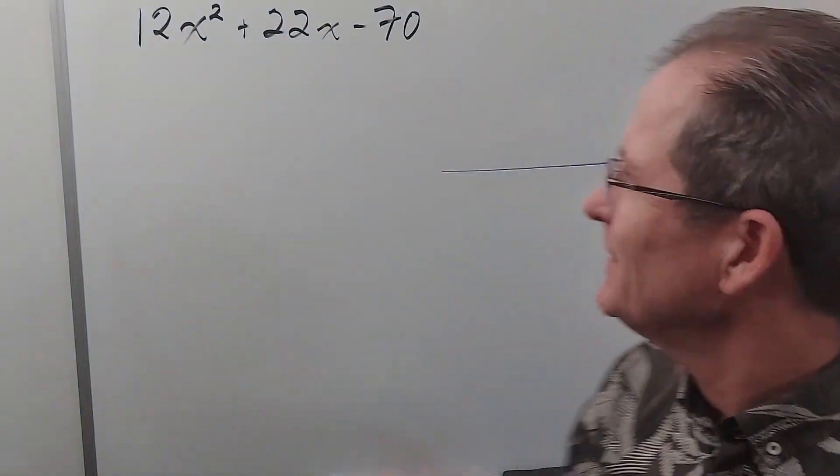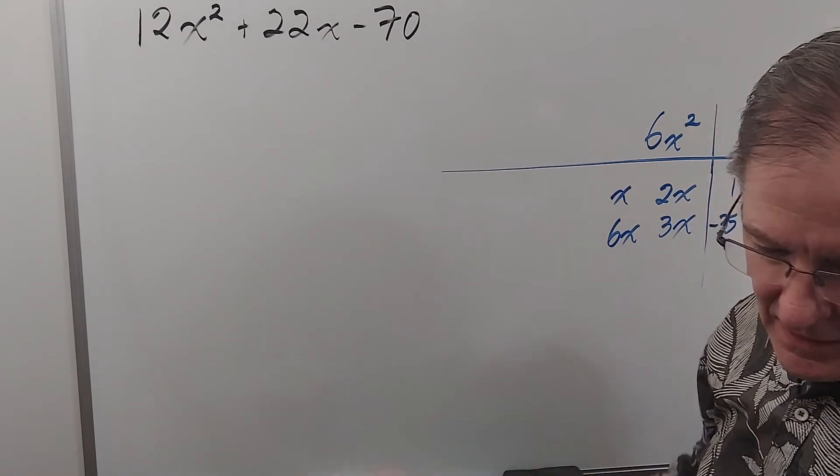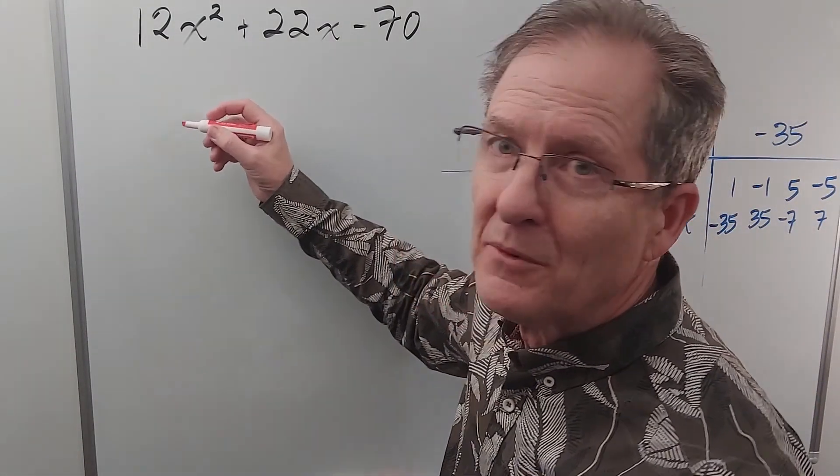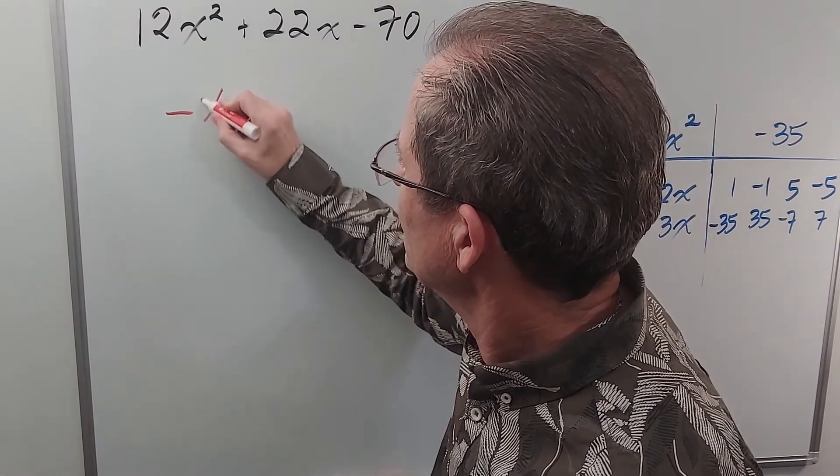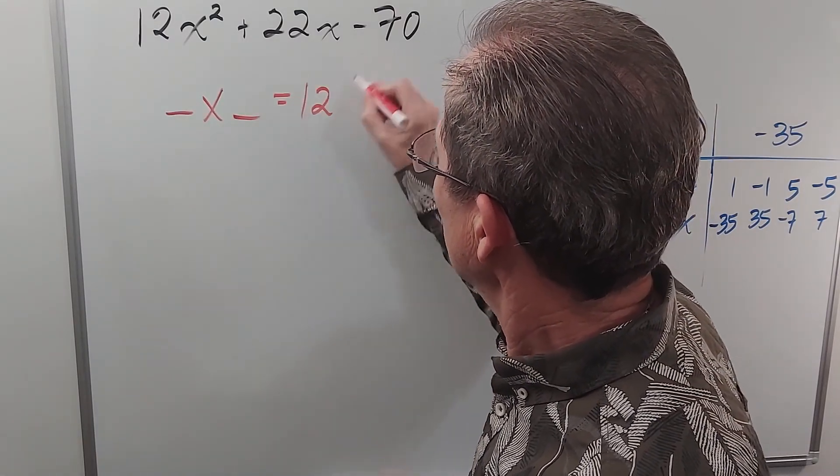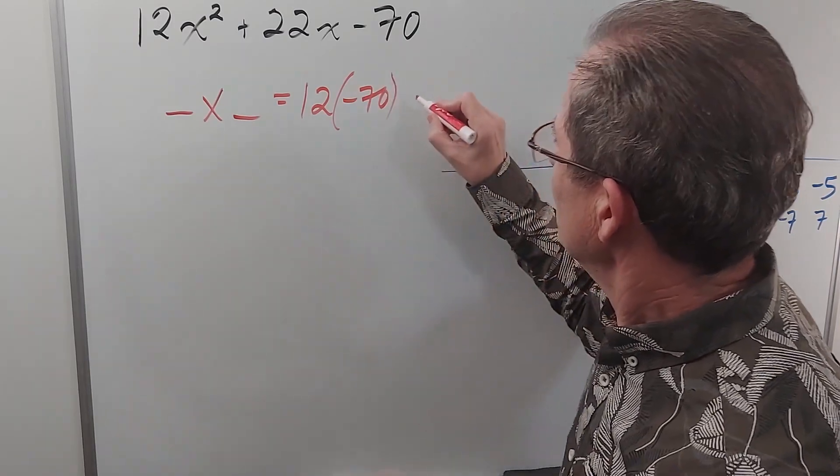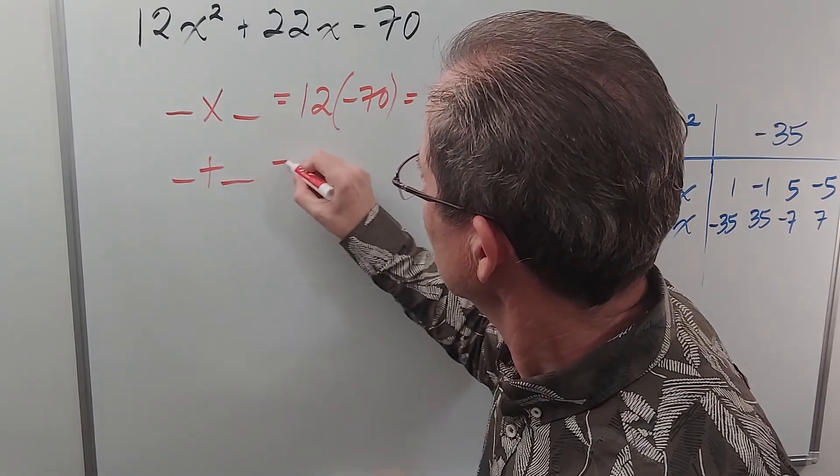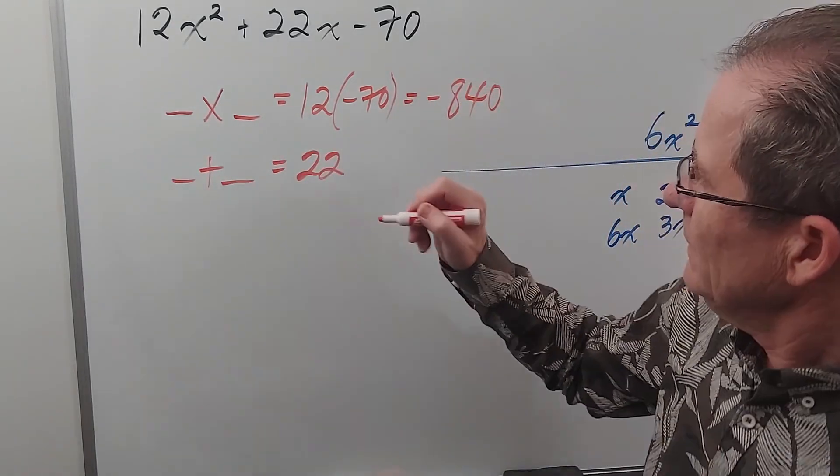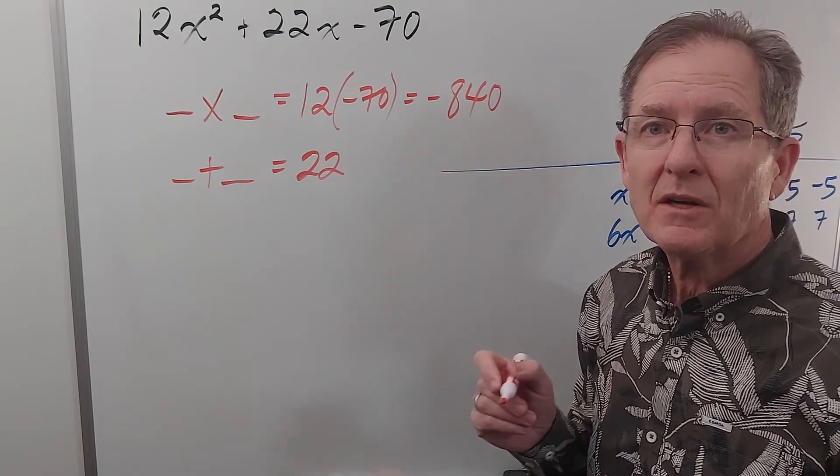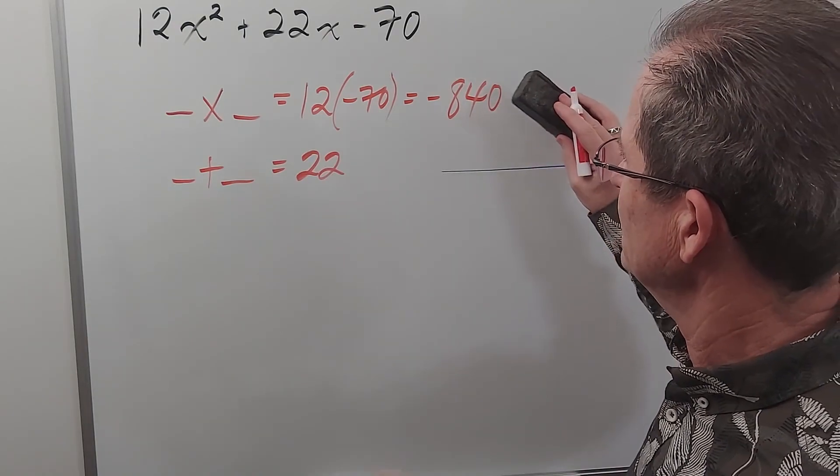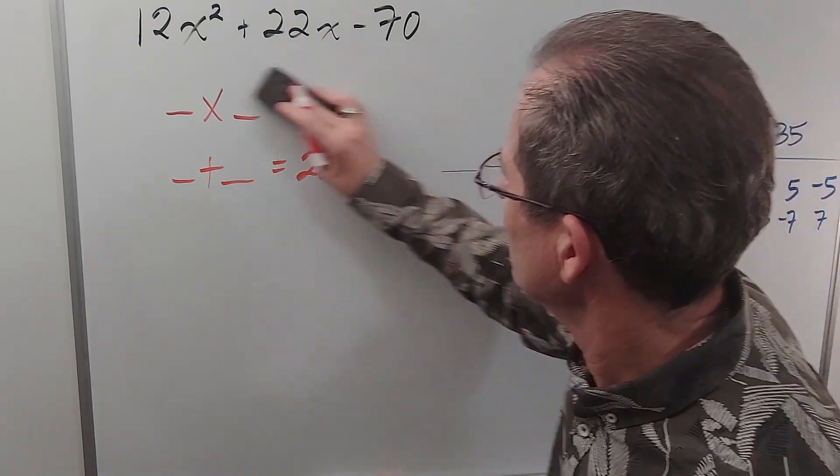Alright, consider the complex trinomial 12x² + 22x - 70. Based on my recent videos, is the first thing I should do to look for two numbers that multiply to 12 times negative 70, which equals negative 840, and the same two numbers adding up to 22? Yes? No? Well we could, but it's not the best thing to do. The best thing to do is to common factor first to make the numbers smaller and easier to work with.